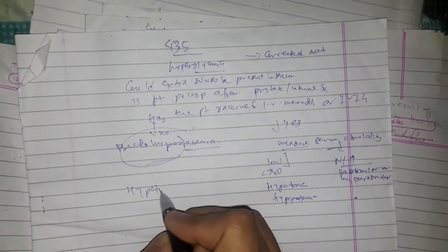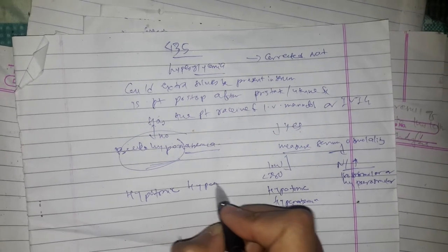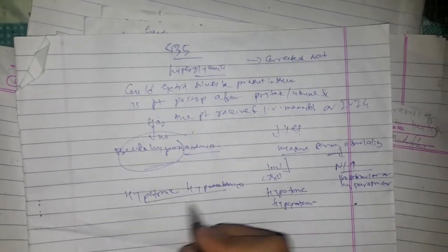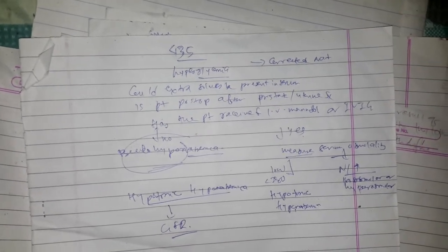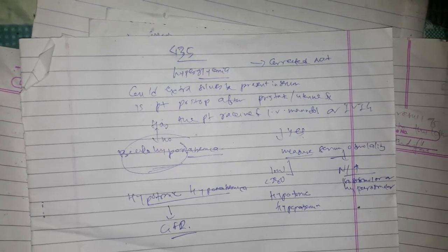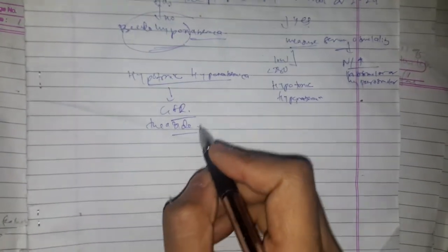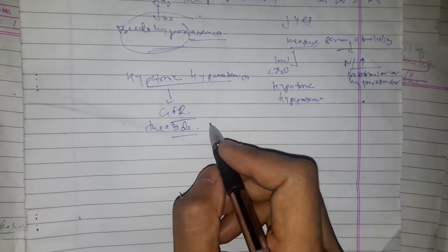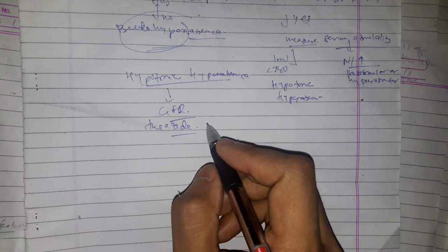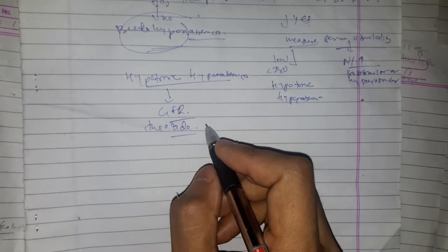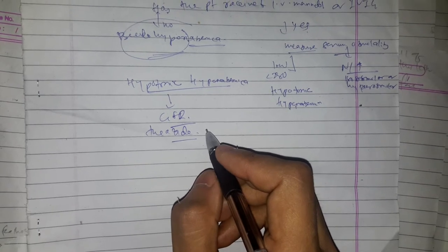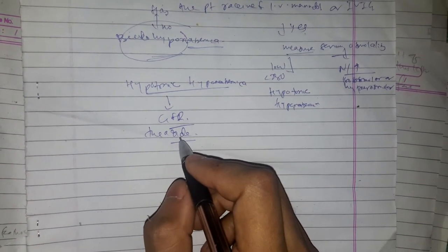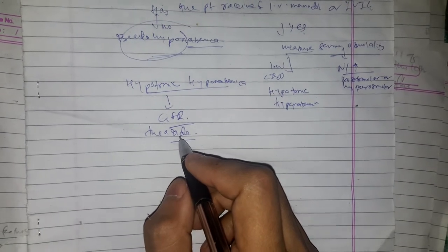If there is no pseudo-hyponatremia and it is hypotonic hyponatremia, check the GFR. If GFR is impaired, the cause may be renal failure. If GFR is normal, check whether the patient has used thiazide diuretics. If thiazides were used, stop them — if hyponatremia resolves, it is thiazide-induced hyponatremia. If it does not resolve, proceed further.